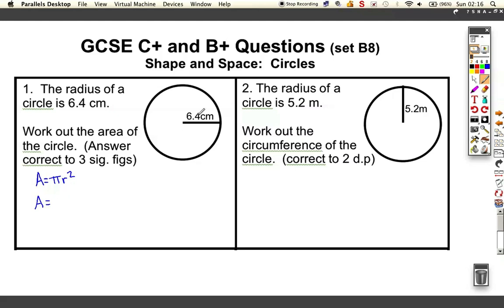This time the radius is 6.4. So I'm going to do pi times 6.4 squared. On my calculator, 6.4 squared times by pi and I get the answer 128.679635 centimetres squared, which is approximately equal to, if I round to three significant figures, 129 centimetres squared.